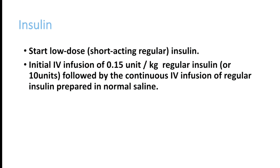The initial infusion protocol is 0.15 units per kg of regular insulin as a bolus, followed by a continuous infusion of regular insulin prepared in normal saline. You can start with a bolus dose or skip it, because insulin infusion is not the emergency in DKA — correction of water deficiency and potassium are the emergencies. You can start at 0.15 units per kg or go straight to an infusion per hour protocol.